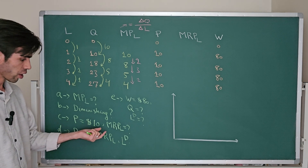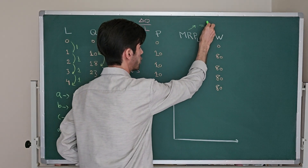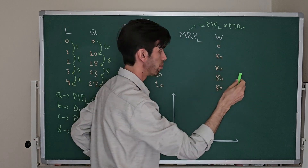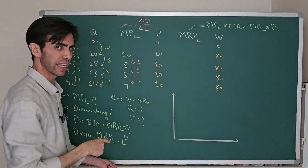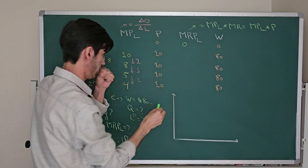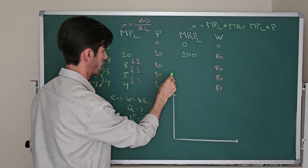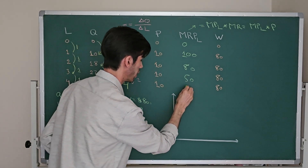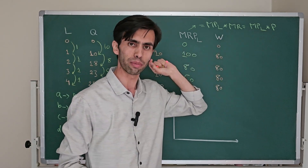Part C: if the price is $10, calculate the marginal revenue product of labor. The formula is: marginal revenue product of labor equals marginal product of labor multiplied by marginal revenue. In a perfectly competitive market, marginal revenue equals price. So: MRPL = MPL × price. With price = $10, the MRPL for the first worker is 10 × 10 = 100; for the second worker, 10 × 8 = 80; for the third worker, 10 × 5 = 50; and for the fourth worker, 10 × 4 = 40.